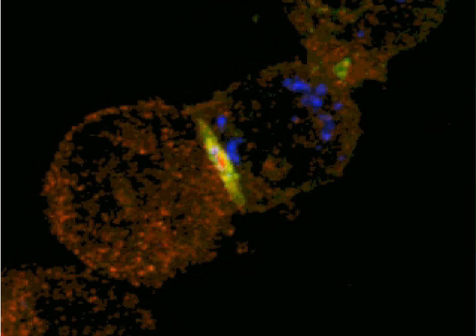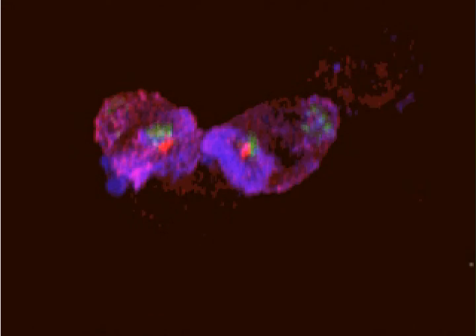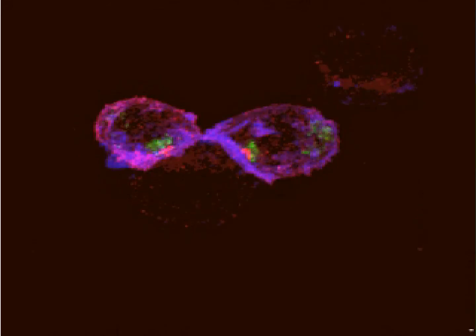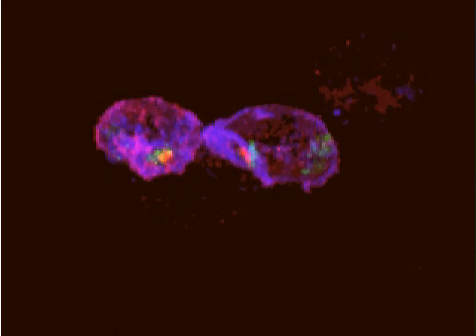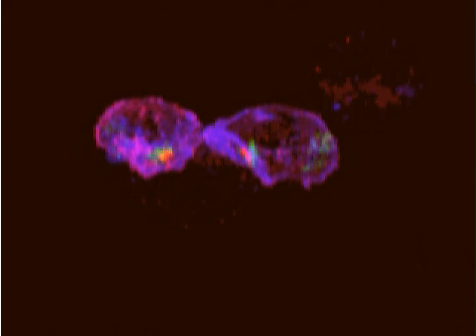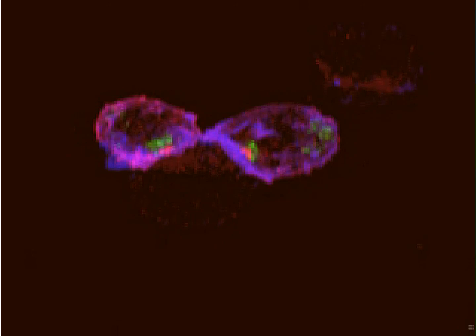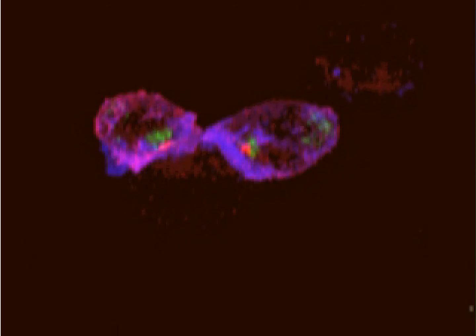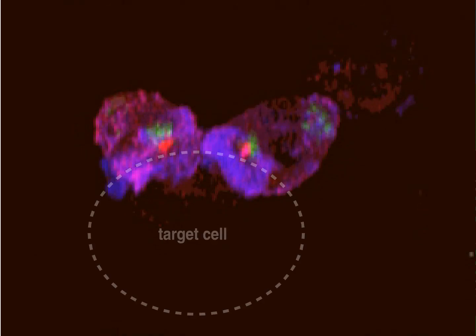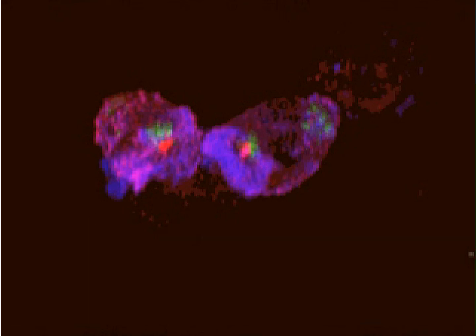Multiple synapses can be formed with the same antigen-presenting cell, as we see here, where two CTLs are trying to kill the same target. Each has formed a synapse organized into discrete signaling and secretory zones. The signaling zones are indicated by the presence of the red-stained signaling molecule LCK, while green-labeled cytotoxic granules can be seen clustered just behind the synapse itself.